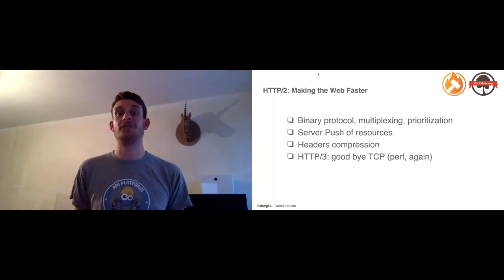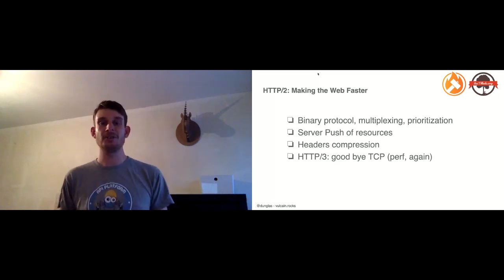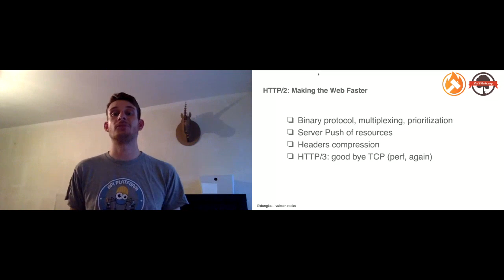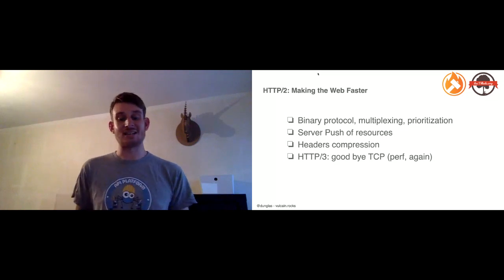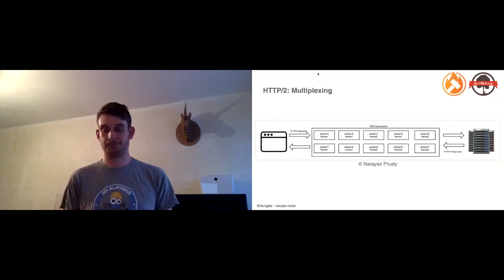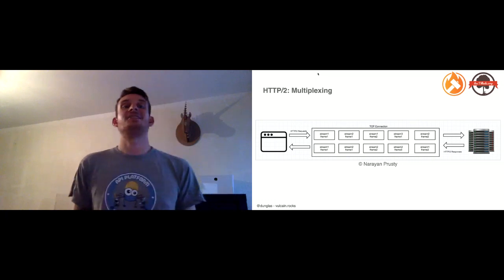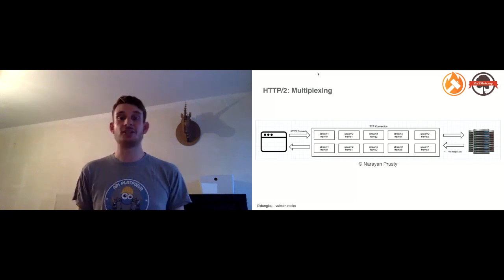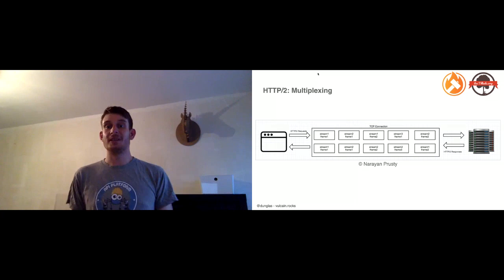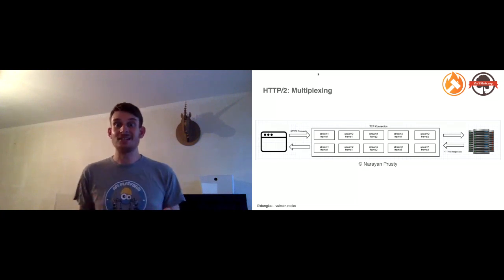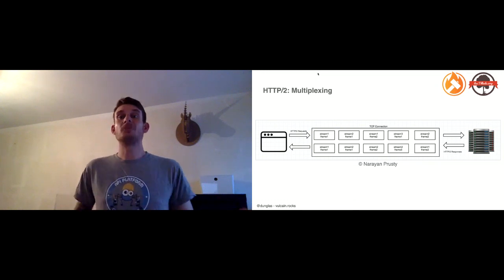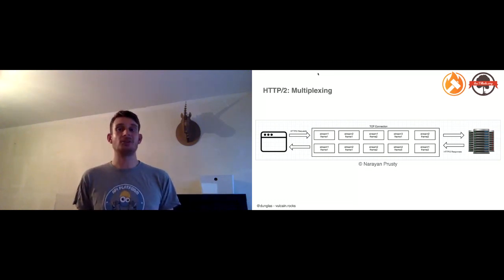There is also a new version called HTTP/3, which uses UDP instead of TCP for even greater performance improvements. One very interesting capability of HTTP/2 is multiplexing: in a single TCP connection (or UDP with HTTP/3) you can download many responses in parallel, and send many requests in parallel. This resolves one of the most important bottlenecks of HTTP/1.